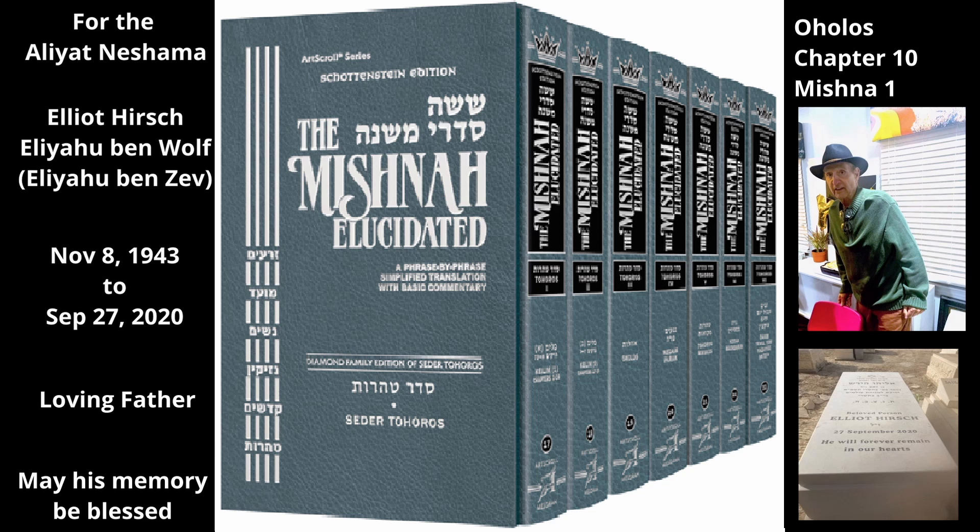And if the source of tuma is opposite, i.e. below the opening, utensils under the roof of the house remain tahor, because the tuma under the opening goes up to the sky in a straight line and does not spread into the house.